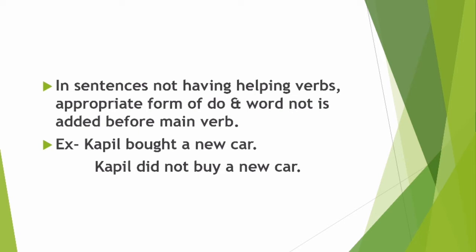In sentences not having helping verbs, an appropriate form of 'do' and the word 'not' is used before the main verb. Like 'Kapil bought a new car.' Its negative is 'Kapil did not buy a new car.' Here we used 'did' — a form of do — because we are talking about the past tense. So this is how we form the negative when there is no helping verb.